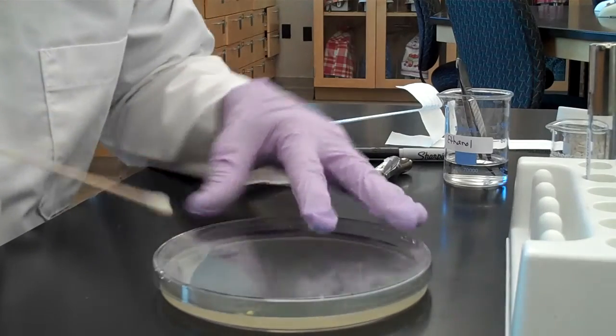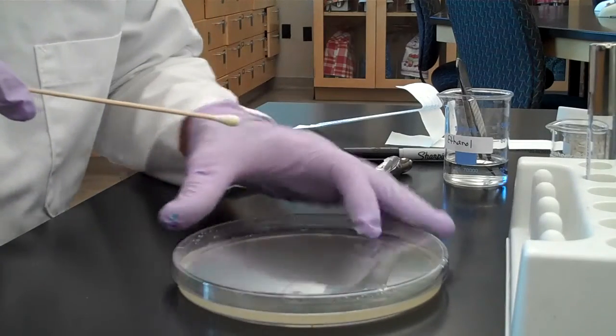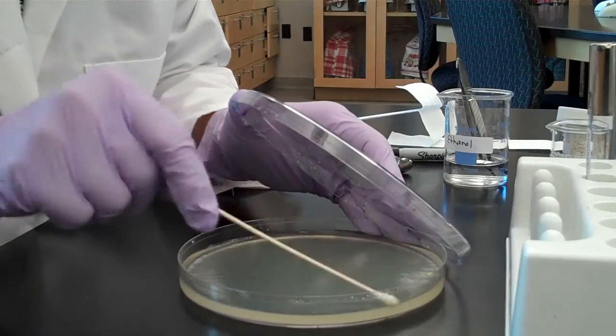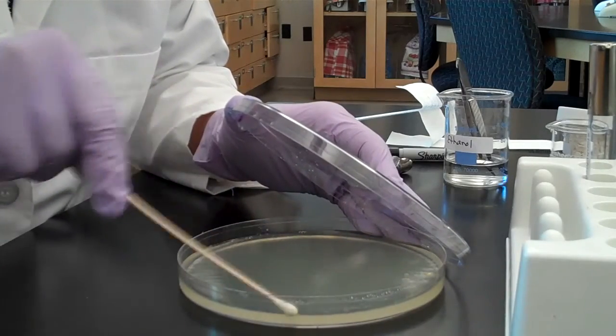And now one more time, turn your plate 90 degrees, back and forth, to make sure you cover every little bit of the agar.